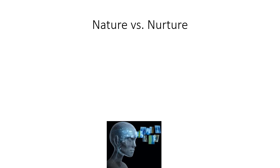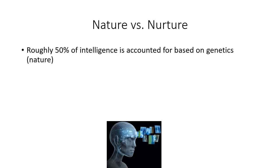Let's go back to one of our favorite topics: nature versus nurture. We know that roughly 50% of intelligence is accounted for based on genetics — it's a 50/50 split in general, though there are exceptions. So 50% of your intelligence is based on your genetic makeup. The other 50% is based on the environment, based on nurture.